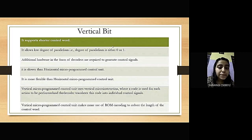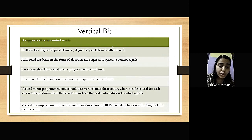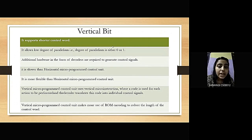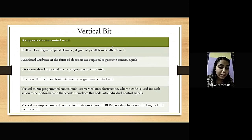In vertical microprogram control unit, it supports shorter control words and makes more use of ROM encoding, so the length of the control word is short. It allows a new degree of parallelism — that is, the parallelism is either zero or one. It is slower than horizontal microprogram control unit but more flexible than horizontal.